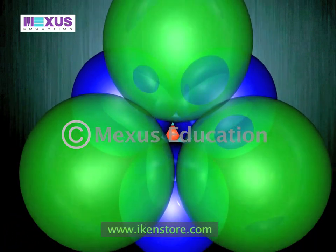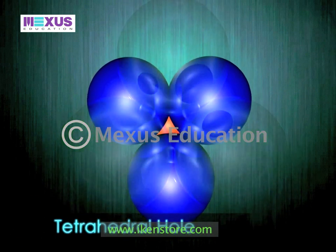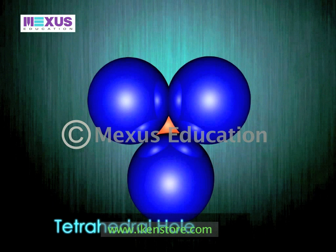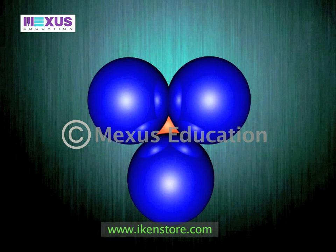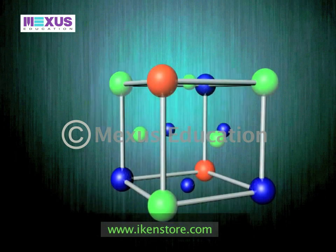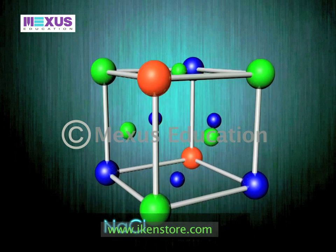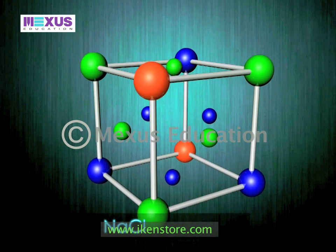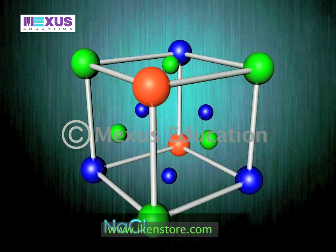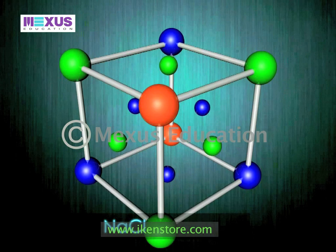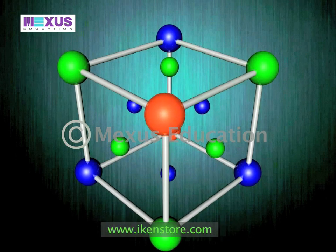The second hole is the tetrahedral hole. It is formed between three atoms in a close-packed layer and a single atom in a close-packed layer just above or below the first layer. In sodium chloride, the octahedral holes are occupied while the tetrahedral holes are vacant.